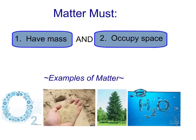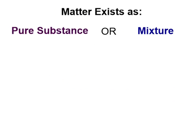Matter must have mass and occupy space. Matter is everything around us, even things we can't see. All matter exists either as a pure substance or as a mixture.